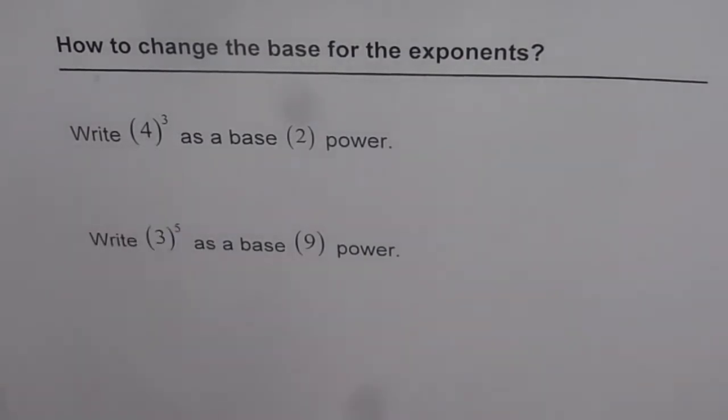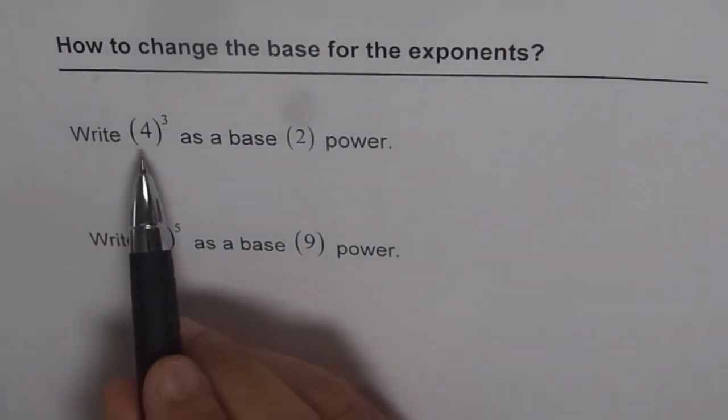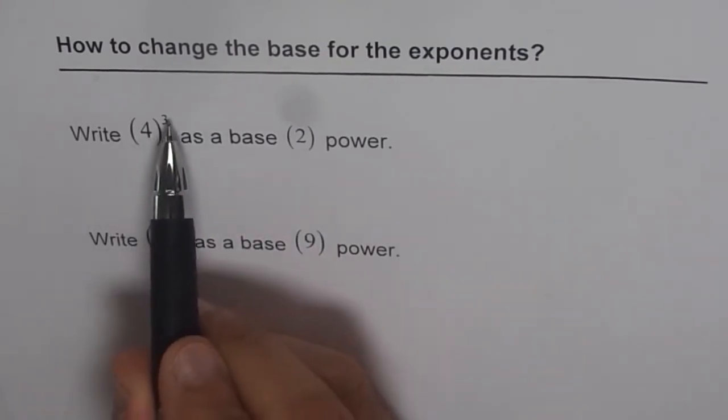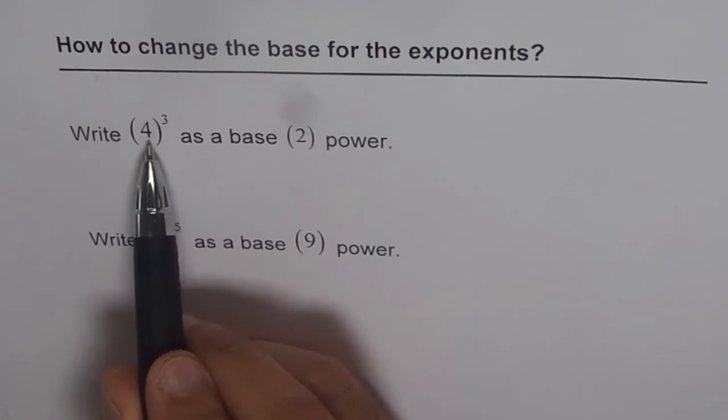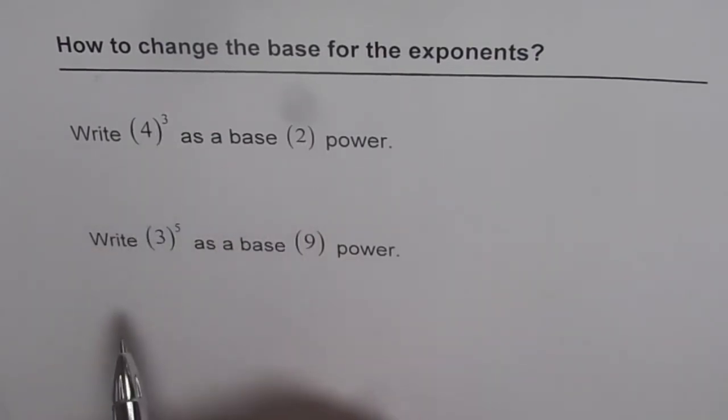Write 4 to the power of 3 as a base 2 power. Basically we want to change the base 4 to 2. Now 4 to the power of 3, base is 4 and the exponent is 3. So when we change the base, let's see what happens. Now we need to change the base from 4 to 2. How can we do it?